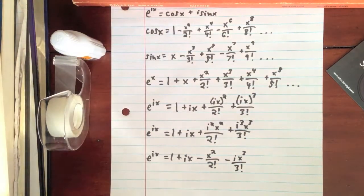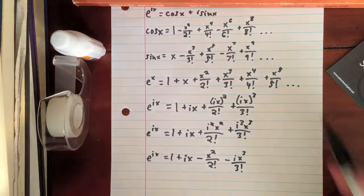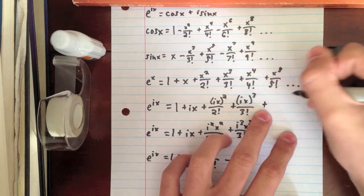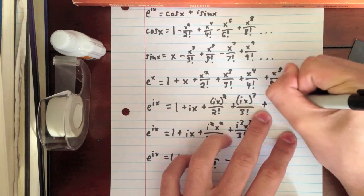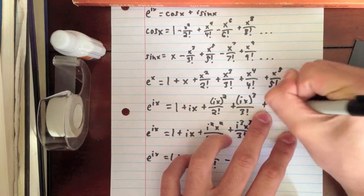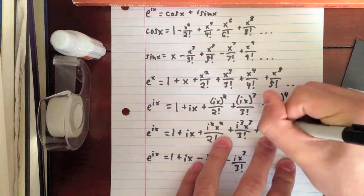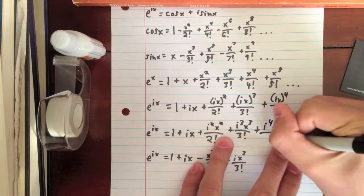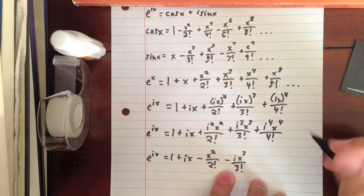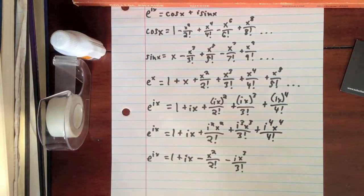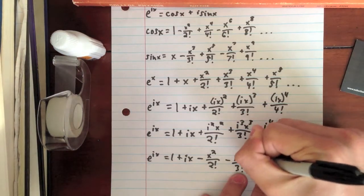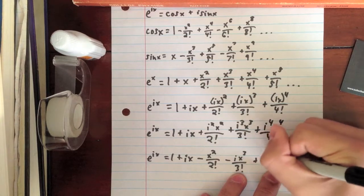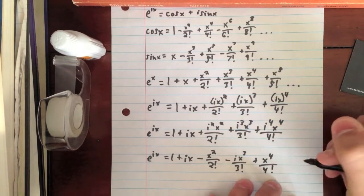All right? And we're just going to keep going with here. So, we have plus x to the fourth over 4 factorial. So, plus ix to the fourth over 4 factorial. Obviously, we do this. i to the fourth x to the fourth over 4 factorial. And we know that i to the fourth is equal to 1. So, we simply write plus x to the fourth over 4 factorial.